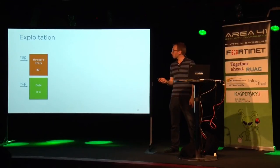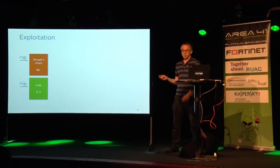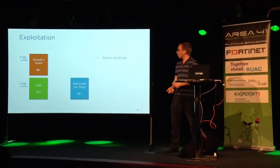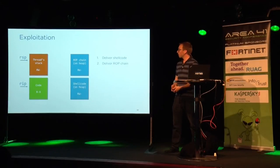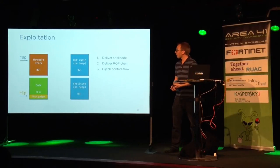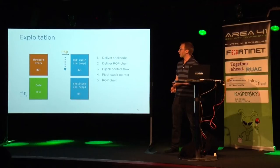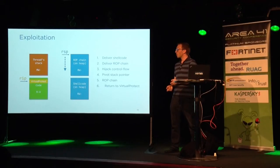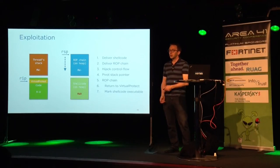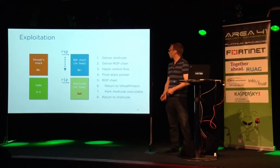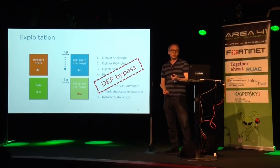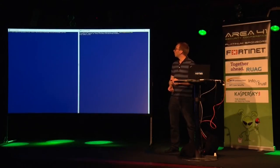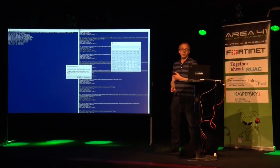In pictures: we have a normal stack, deliver the shellcode on the heap (non-executable), deliver the ROP chain (also non-executable), hijack control flow, pivot the stack to point to the ROP chain, the ROP chain gets executed, and eventually we end up in a VirtualProtect call which marks the shellcode executable. Then we execute our shellcode. DEP is also bypassed — and this is a screenshot of our demo program popping calc.